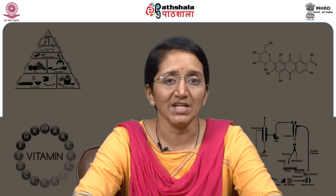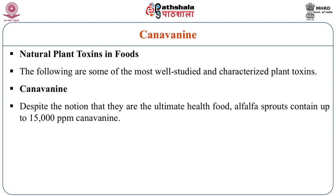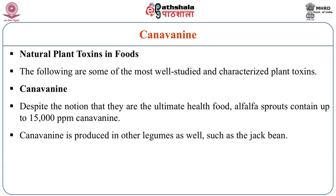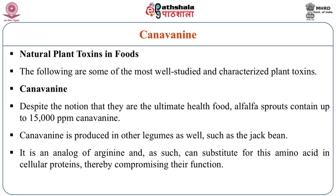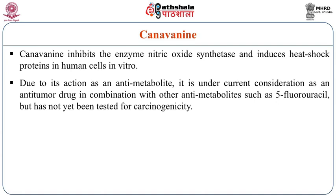Coming to the various kinds of natural plant toxicants, the first toxicant is canavanine. Despite the notion that they are the ultimate health foods, alfalfa sprouts contain about 15,000 ppm of canavanine. Canavanine is produced in other legumes as well, such as the jack bean. It is an analogue of arginine and as such can substitute this amino acid in cellular proteins, thereby compromising their function. Canavanine inhibits the enzyme nitric oxide synthetase and induces heat shock proteins in human cells in vitro.